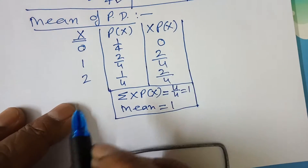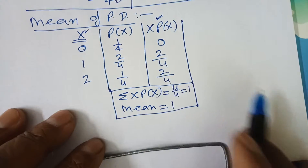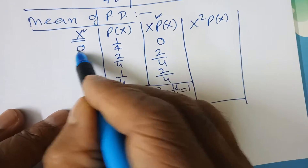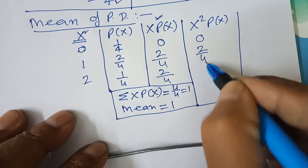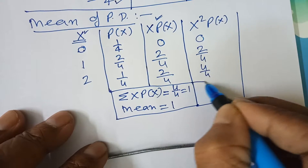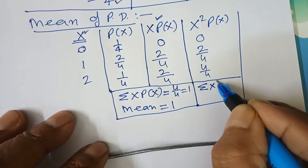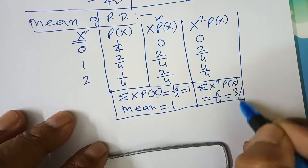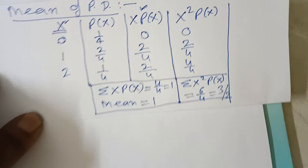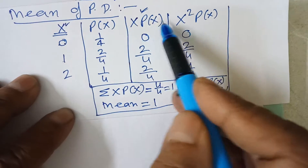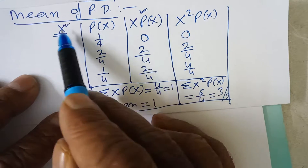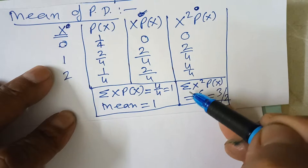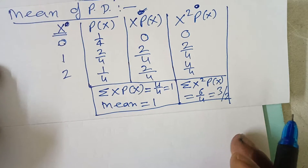Now for variance, multiply x by x·P(x) to generate the column x²·P(x). We get: 0×0=0, 1×(2/4)=2/4, 2×(2/4)=4/4. Adding this column gives sigma x²·P(x) = 6/4 = 3/2. This column is needed for the variance calculation.